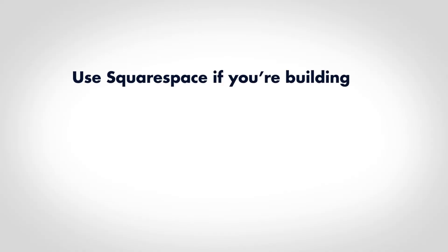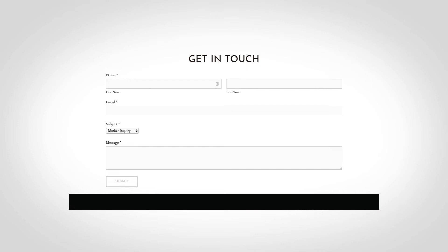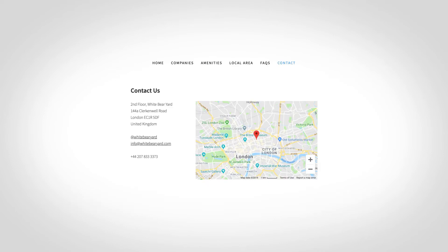Here's a good rule of thumb: use Squarespace if you're building a conventional website, and use WordPress if you need an unconventional feature. Photography portfolios, blogs, and small business websites are all examples of conventional websites. They need features like photo galleries, forums, and maps — all of which Squarespace does an excellent job of supporting.